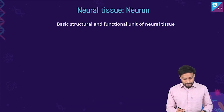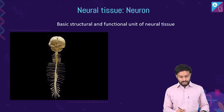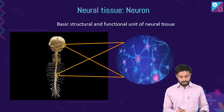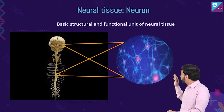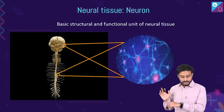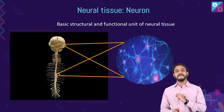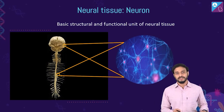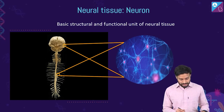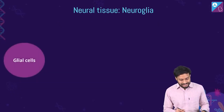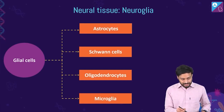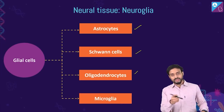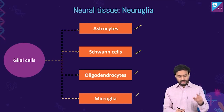The neuron is the basic structural and functional unit of neural tissue. The neuroglia — or glial cells — are of several types: astrocytes, Schwann cells, oligodendrocytes, and microglia.